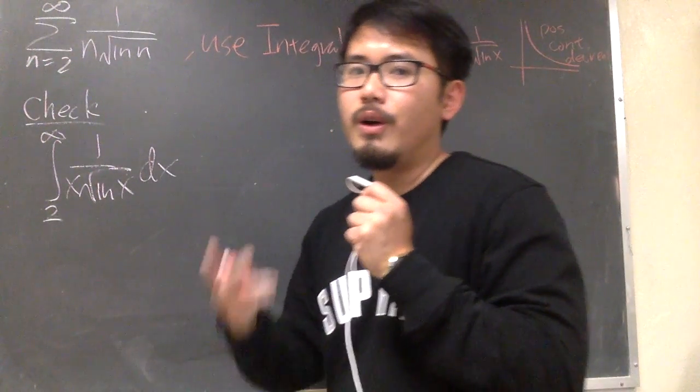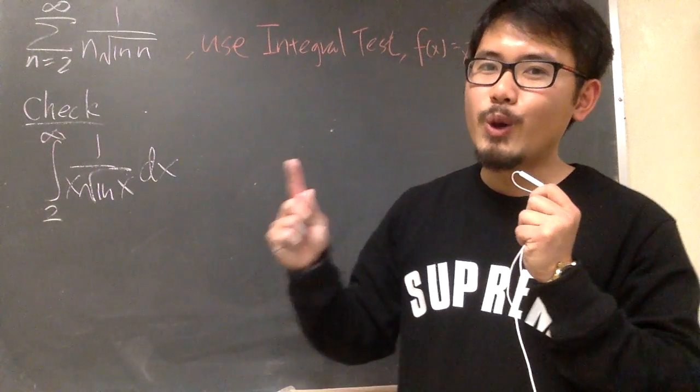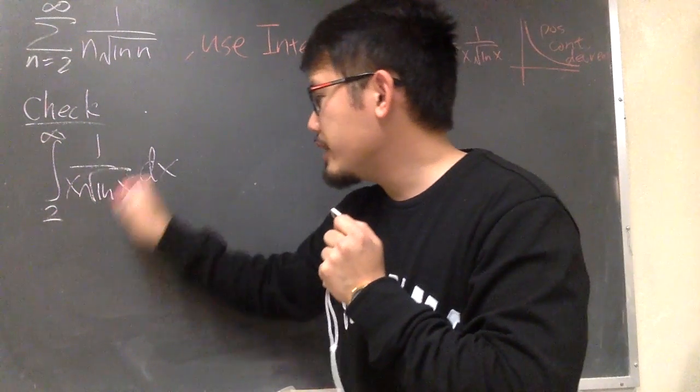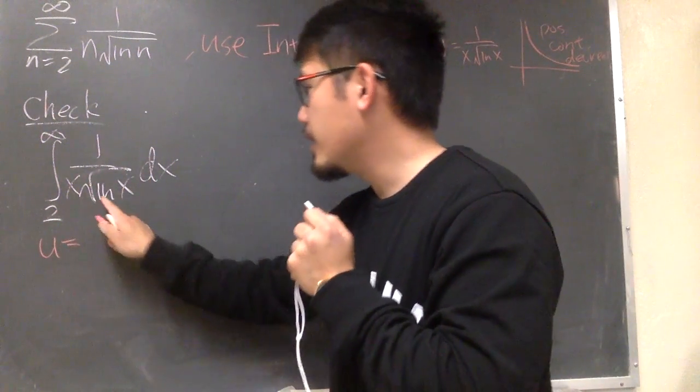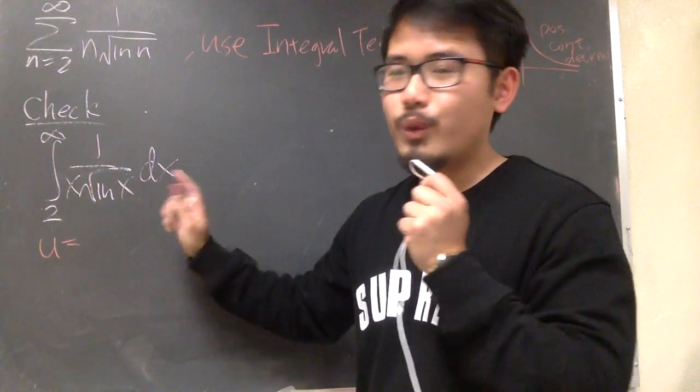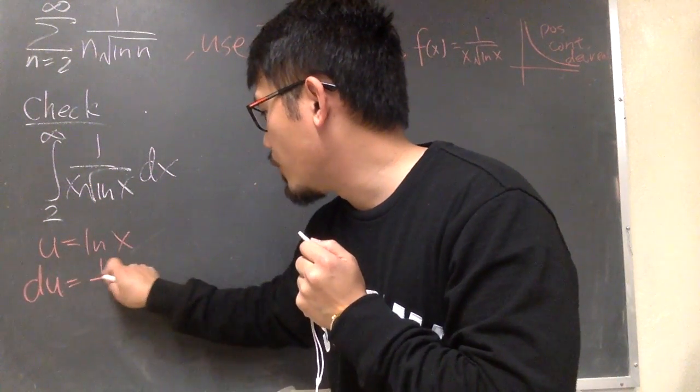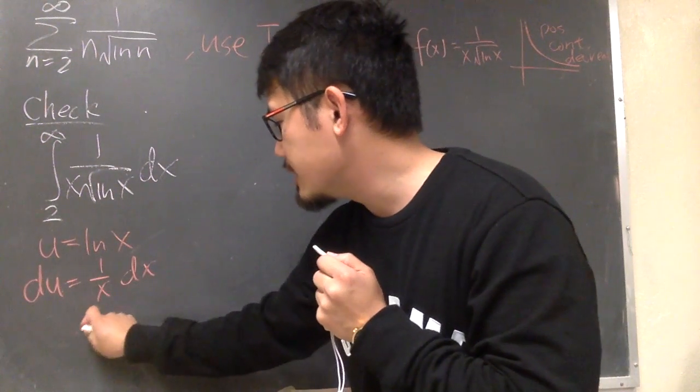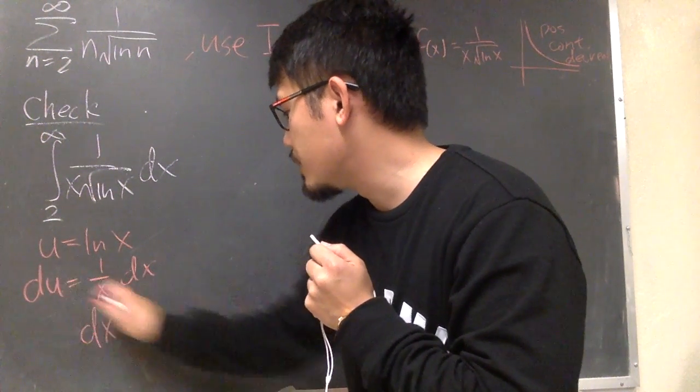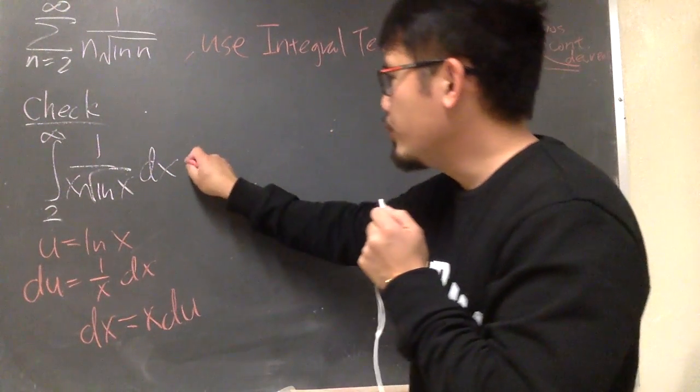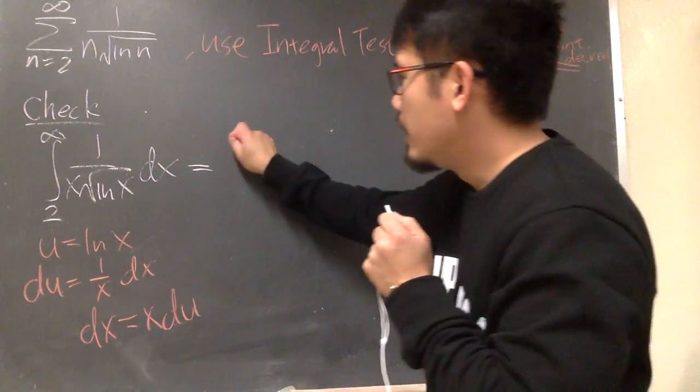All right. To do improper integral, two things: know your integration and believe in your limit. So let's do it. To integrate this, I'm going to use the u substitution that u equals to inside function, which is the ln x. And then you see du is 1 over x dx. Multiply x on both sides, you get dx equals to x du. And we'll take this integral into the u world. Let's see what we get.